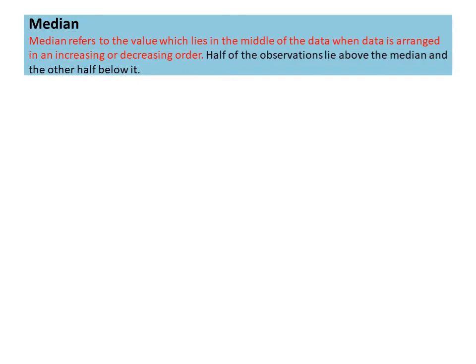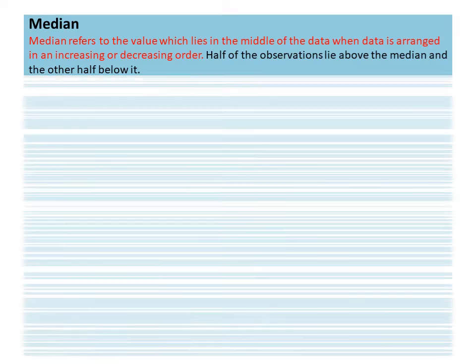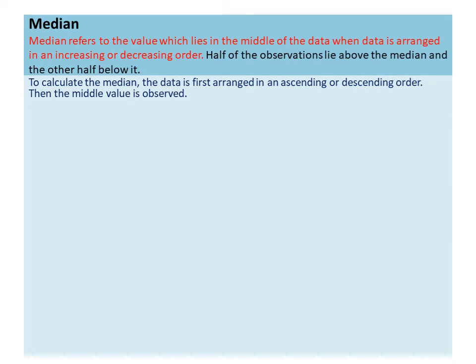The next representative value is median. Median refers to the value which lies in the middle of the data when the data is arranged in ascending or descending order. Therefore, half of the observations lie above the median and the other half below it. For calculating median, the data is first arranged in ascending or descending order, and then we find the middlemost observation.